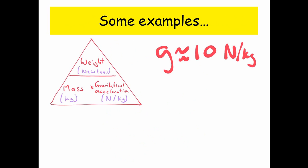Now on planet earth, g is roughly 10 newtons per kilogram, it's actually slightly less, but we're going to just take it as 10 for today. So there's our equation, weight equals mass times gravity.